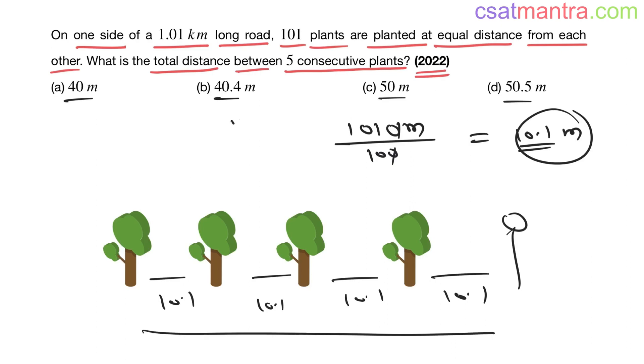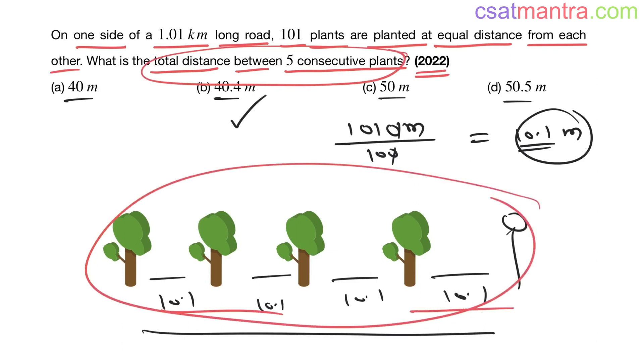40.4, answer B. Total distance between five consecutive plants - this distance 40.4, very easy problem. Convert the kilometers into meters: 1010 meters. To plant 101 plants, you have to divide this distance into 100 equal parts, so each part would be 10.1 meters length. For five plants, five consecutive plants, you need four parts. So four into 10.1 equals 40.4, answer B.